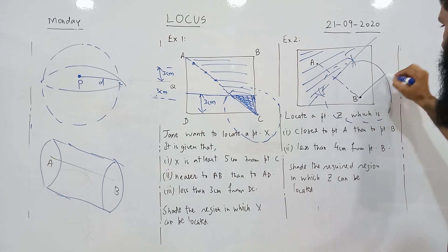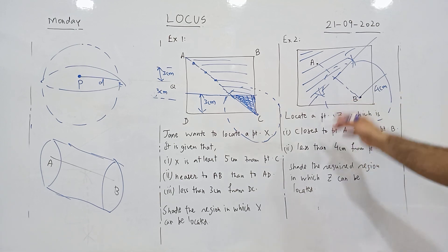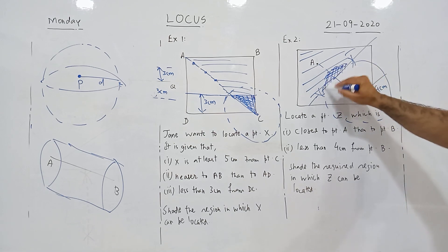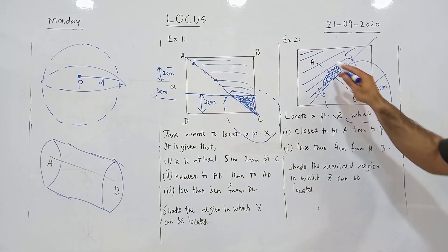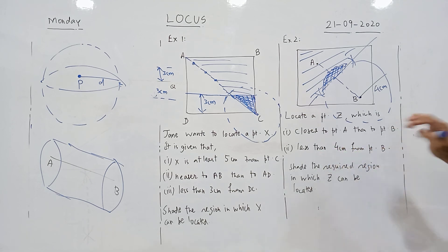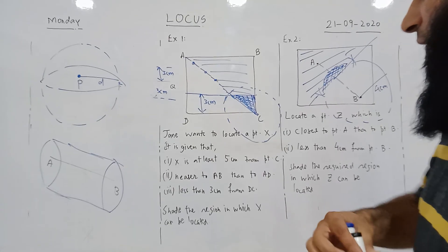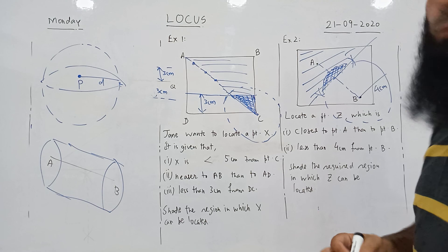The required region satisfying both conditions is where the two loci overlap — it is closer to A than to B, and it is within four centimeters from point B. This region satisfies both conditions simultaneously, lying inside the circle and on the correct side of the perpendicular bisector.